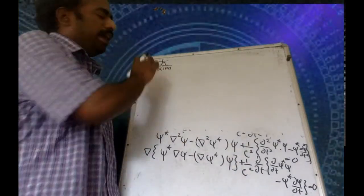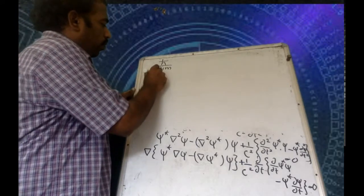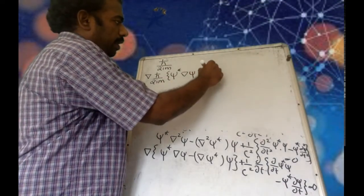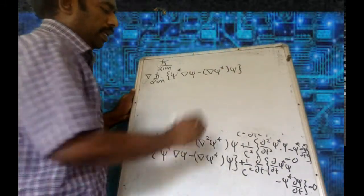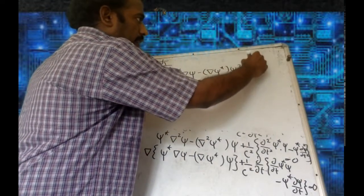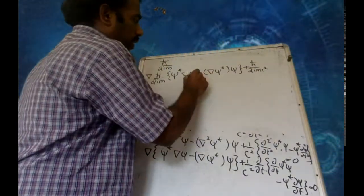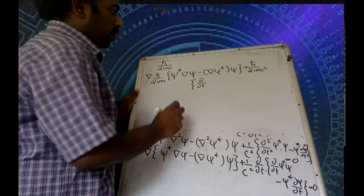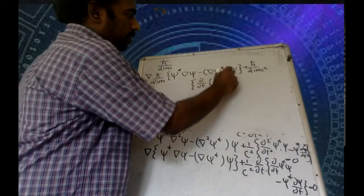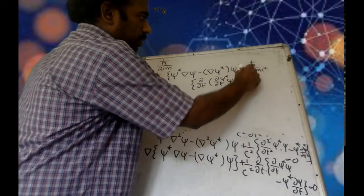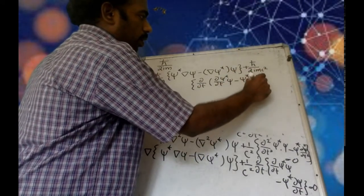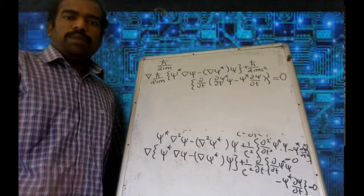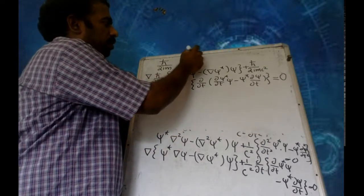Now multiply throughout by ℏ/(2im). The result is: del · [ℏ/(2im) · (psi-star del psi minus del psi-star · psi)] plus ℏ/(2im c²) · (∂psi-star/∂t · psi minus psi-star · ∂psi/∂t) = 0.